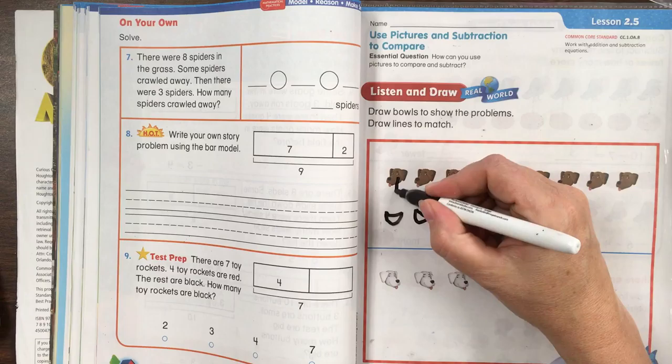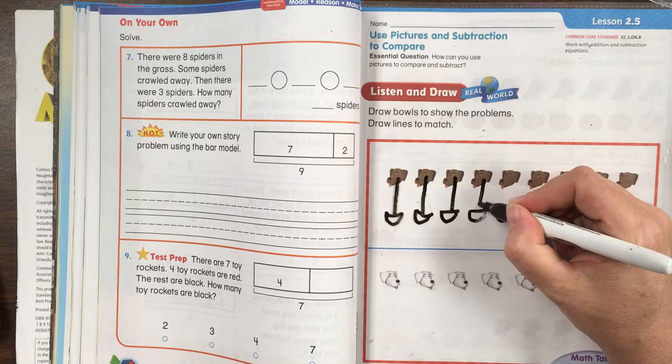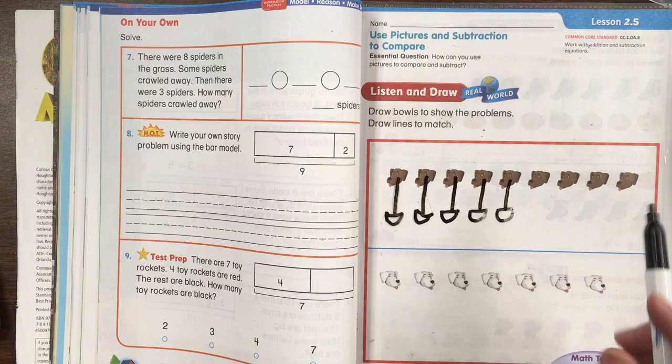Now we're going to draw lines to match each dog to a bowl. And we ran out of bowls. How many dogs still need a bowl?